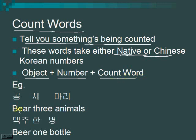For example, to say 'three bears,' use the count word for animals: 곰 세 마리. 곰 is bear, 세 is three, and 마리 is the animal counter. Notice it's 세, not 셋 — I'll explain why in a moment. For 'one beer,' you say 맥주 한 병. 맥주 is beer, 한 is one (changed from 하나), and 병 is the bottle counter.